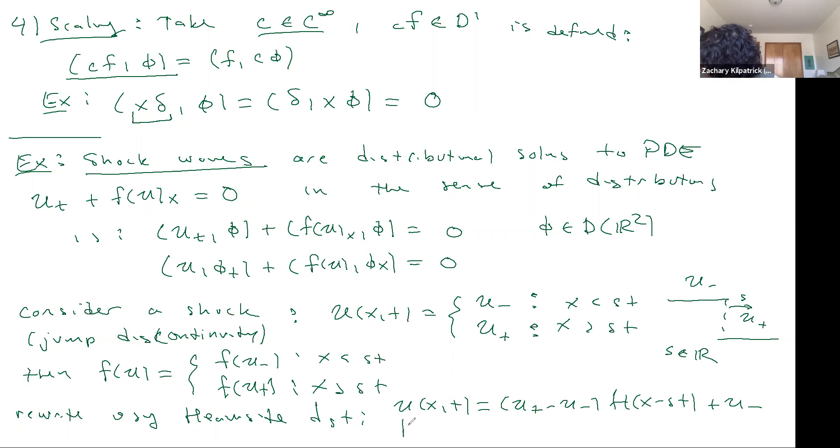And F of U is also a function of XT. Is equal to F of U plus minus F of U minus times the heaviside distribution at X minus ST plus F of U minus here.